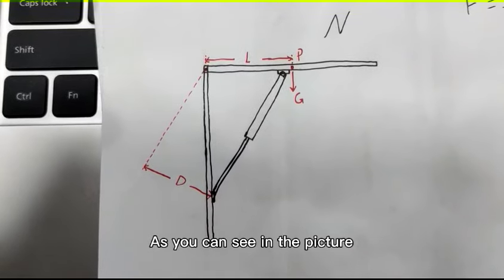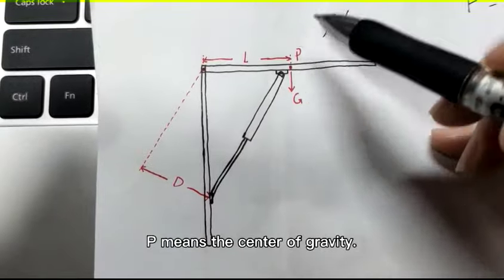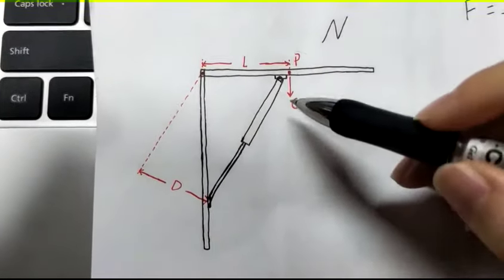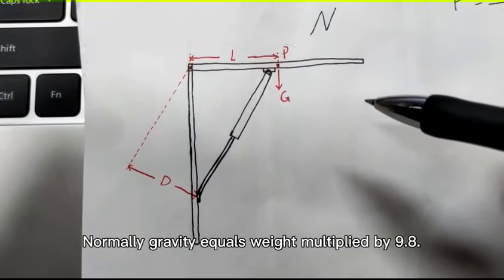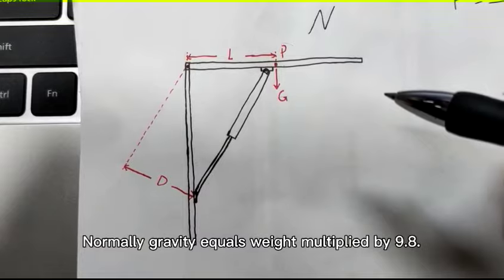As you can see in the picture, P means the center of gravity, G means the gravity. Normally, gravity equals weight multiplied by 9.8.